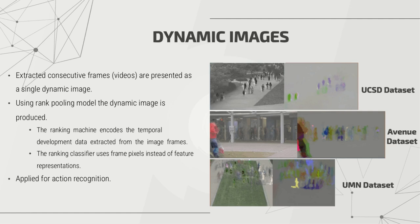Dynamic images are the temporal representation of a number of consecutive frames, calculated using a rank pooling model. The ranking machine encodes the temporal development data extracted from the images, and the ranking classifier uses frame pixels instead of feature representation. Dynamic images have been used for action recognition tests. Another version is dynamic optical flow, calculated on the optical flow difference of consecutive frames. Both dynamic images and dynamic optical flow have excelled in action recognition accuracy results compared to static images and plain optical flow.